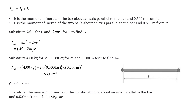Therefore, the moment of inertia of the combination about an axis parallel to the bar but at a distance of 0.500 meter is 1.15 kg meter square. Thank you.